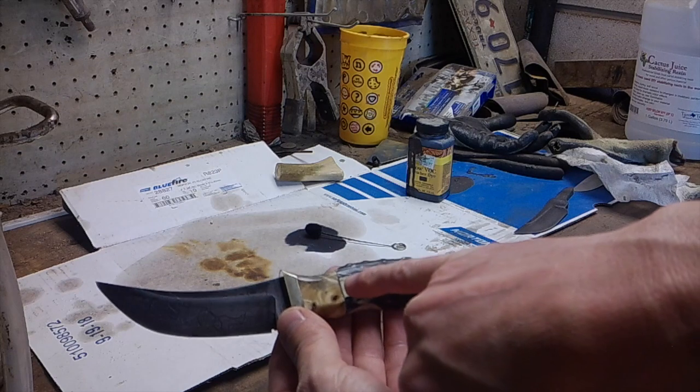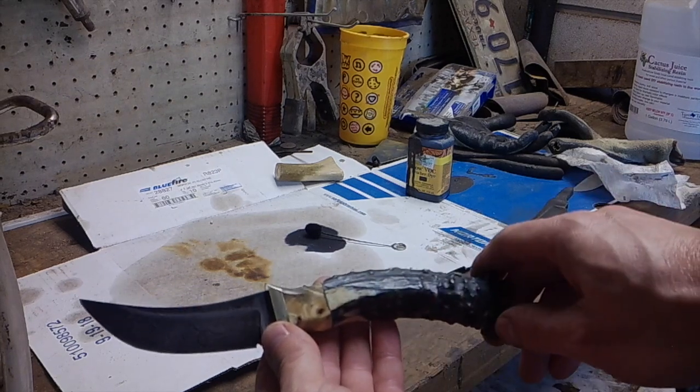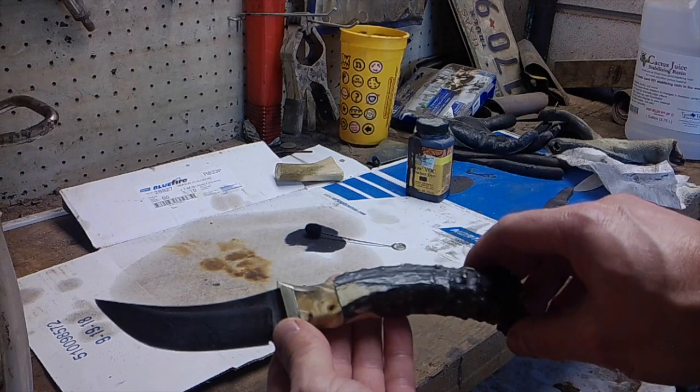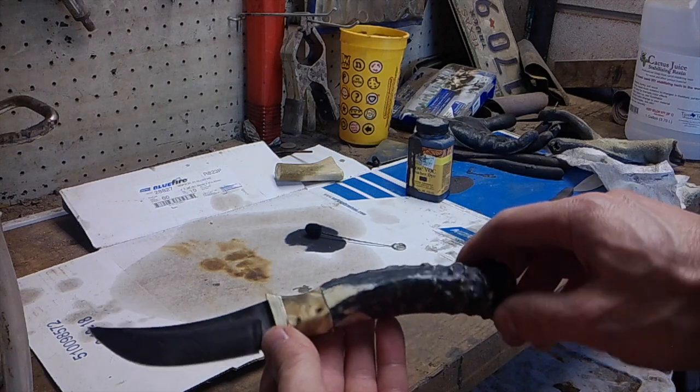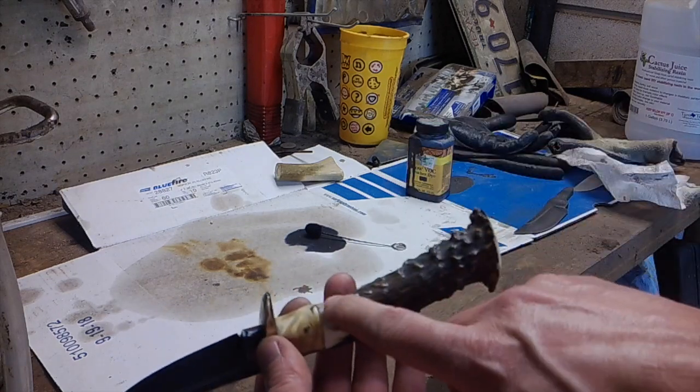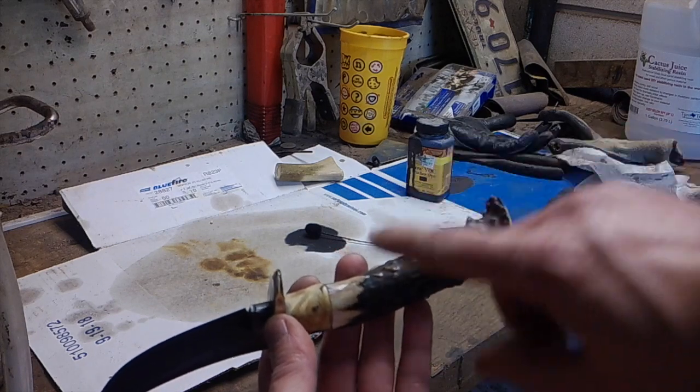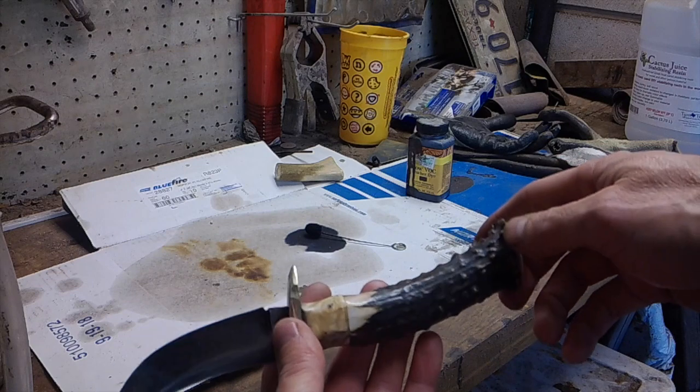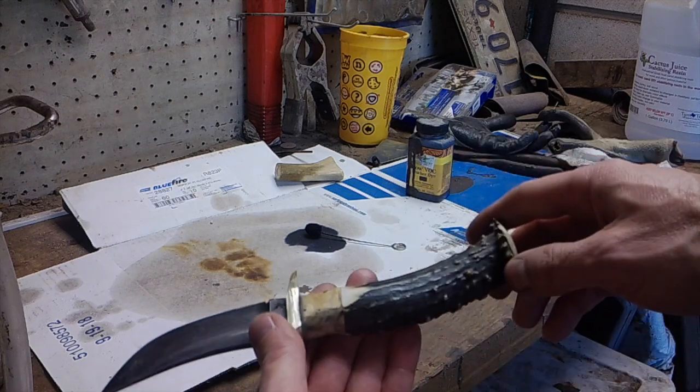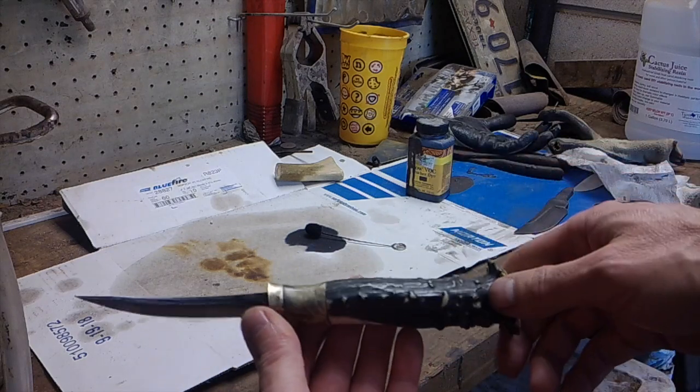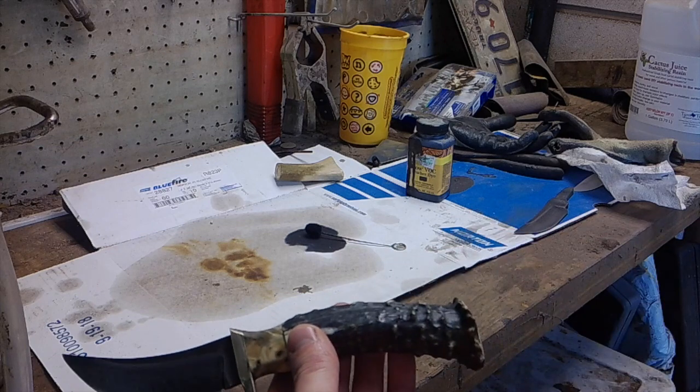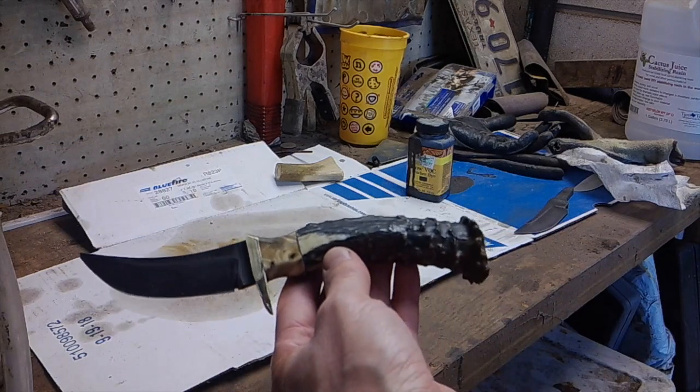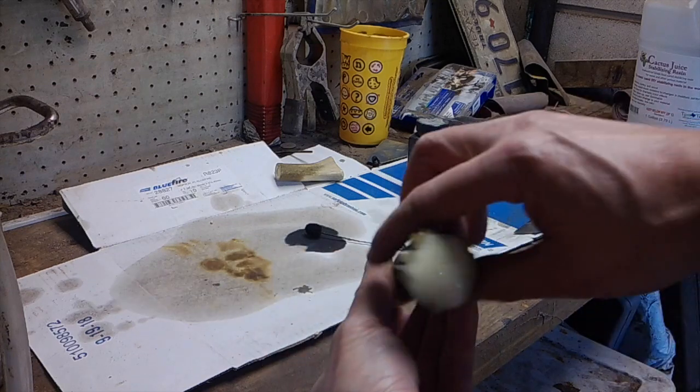You can see how the cracks let the black dye soak in, kind of gave that some personality. See how that brown dye bit in a little deeper than the black. Come around here. All in all, we just took that piece of bleached out antler and made something, I think, pretty nice out of it.